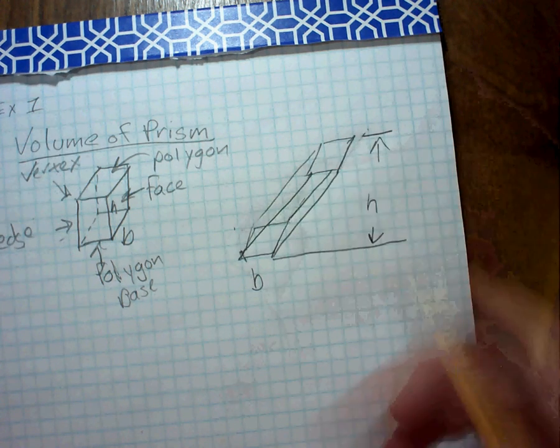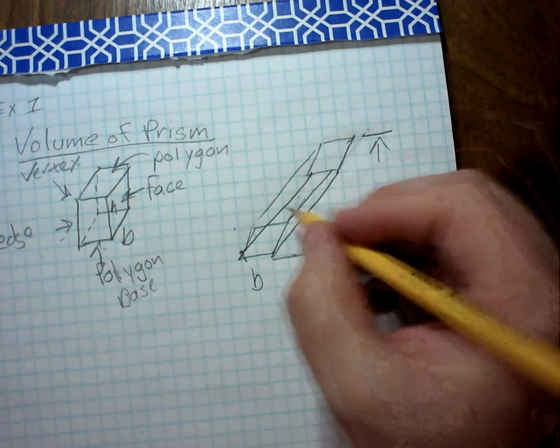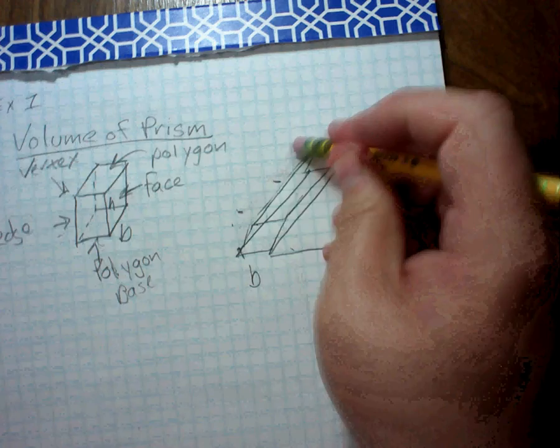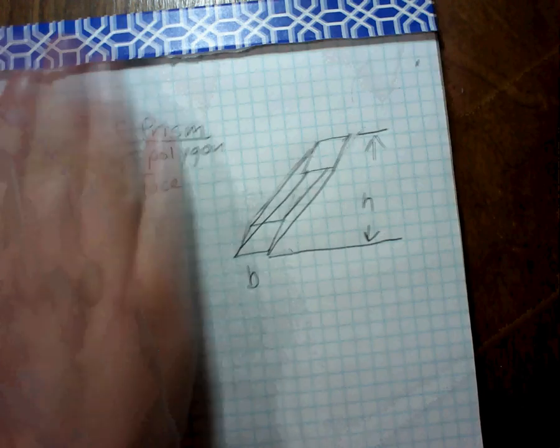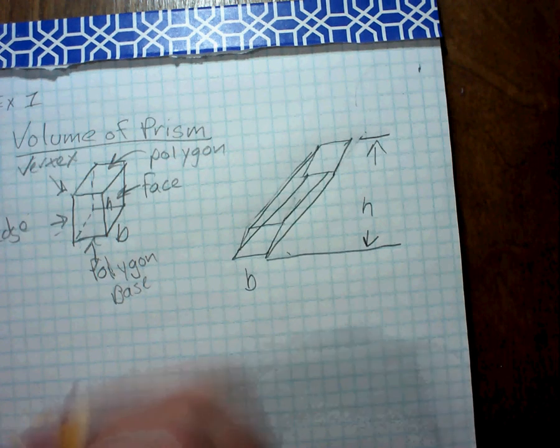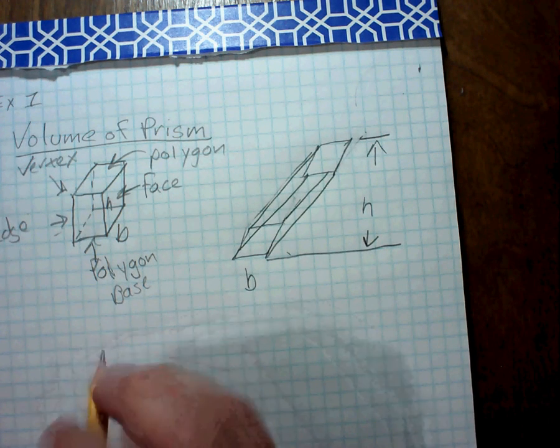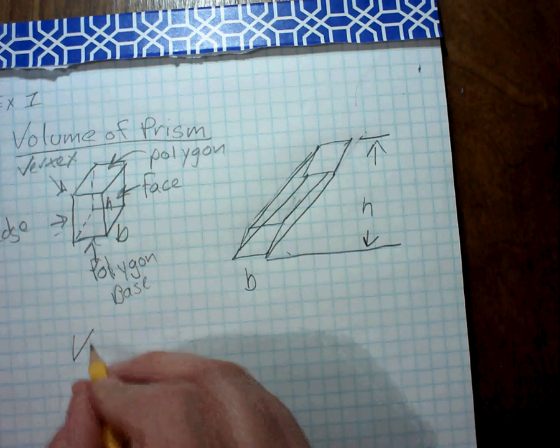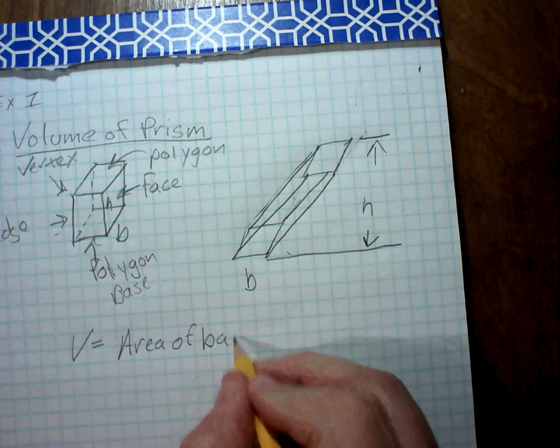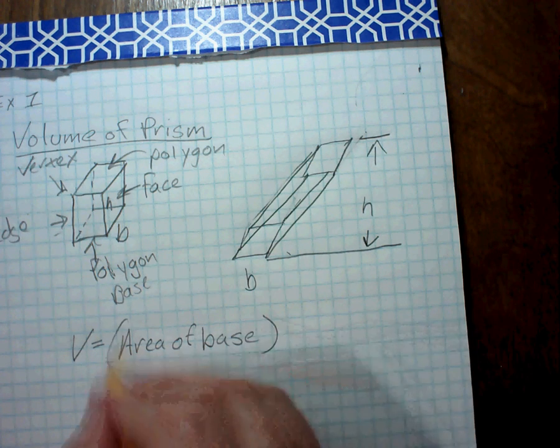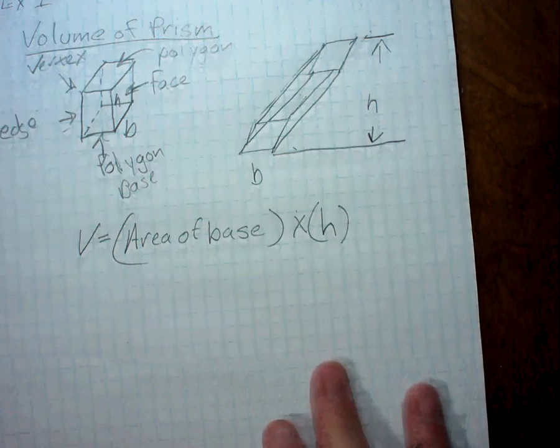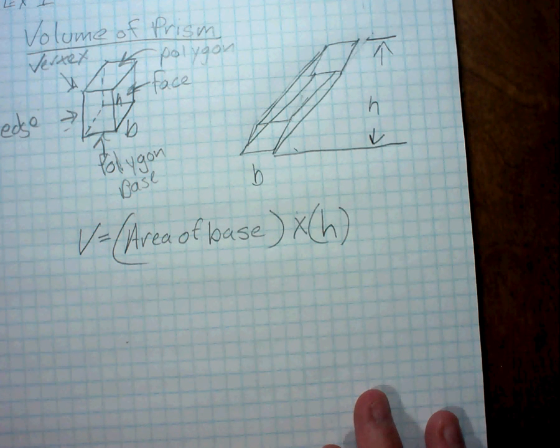And while this image is not the best drawing, I'll be the first to admit that, all we're doing is we're taking this image and we're just kind of slanting it. So the volume for this is just the area of the base times the height. So the volume on these prisms is always going to be the base times the height.